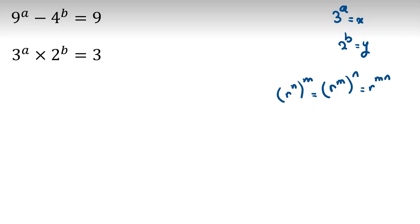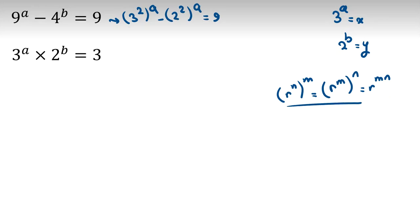Let's reshape the first equation. 9 to the A is 3 squared to the A, and 4 to the B is 2 squared to the B, so this equals 9. Using the power rule, it becomes 3 to the A squared minus 2 to the B squared equals 9. Since 3 to the A is X and 2 to the B is Y,